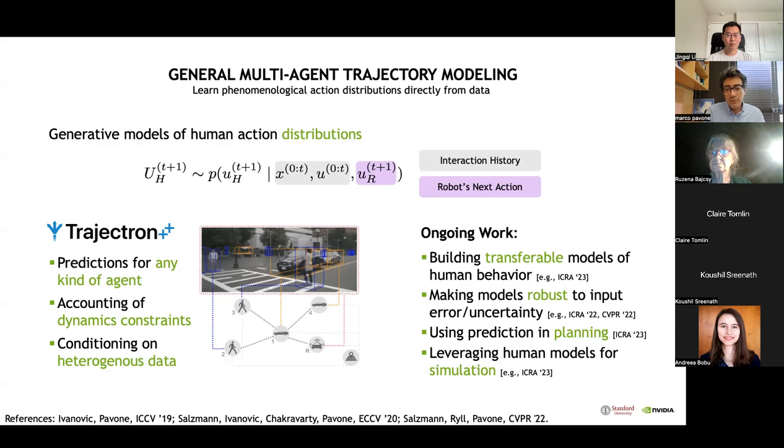Leveraging Trajectron++ as our base trajectory forecasting model, we're currently working on four main themes: building transferable models of human behavior which can be readily transferred to other areas; one of the key challenges in the AD domain is scalability. We can do quite a good job training a neural net for San Francisco, but the moment we use it in Rome or Munich, the model wouldn't work well anymore.